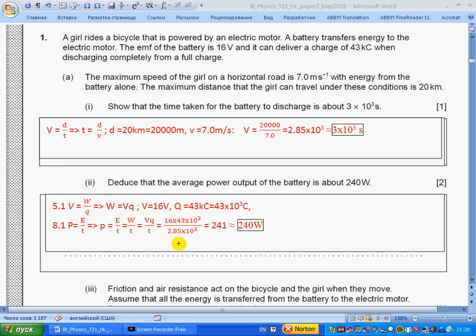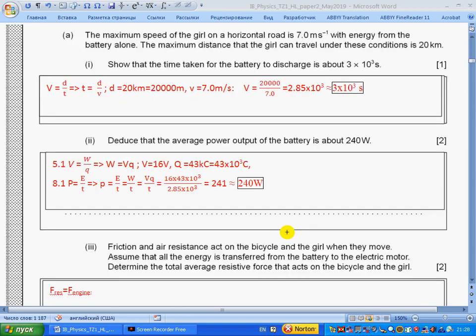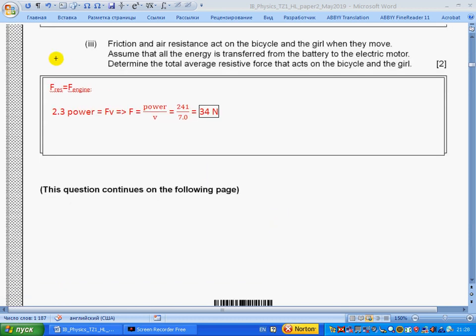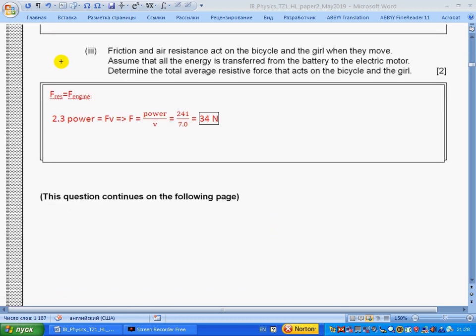Part iii: Friction and air resistance act on the bicycle and the girl when they move. Assume that all energy is transferred from the battery to the electric motor. Determine the total average resistive force that acts on the bicycle and the girl. We assume that the girl is moving at constant speed, which means that resistive forces are equal to the forces of the engine. Section 2.3: power equals force times speed.